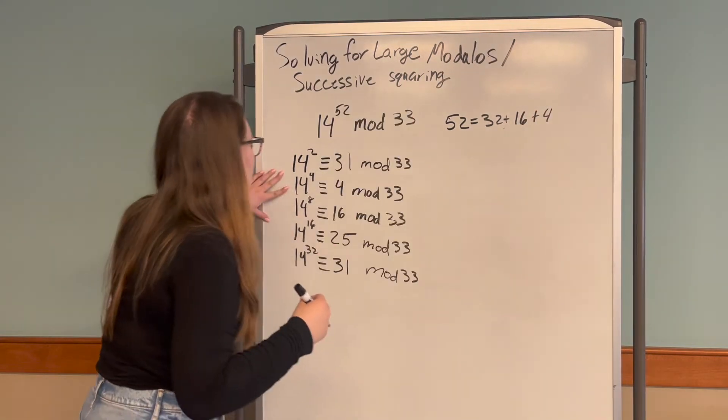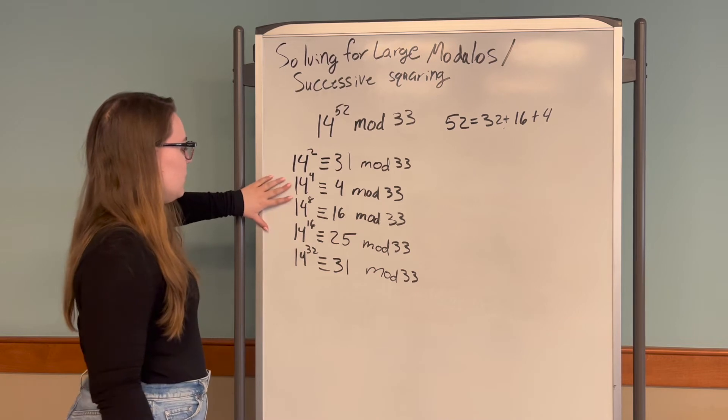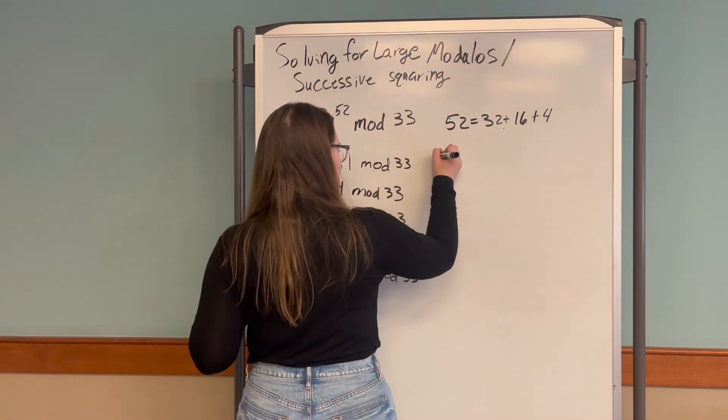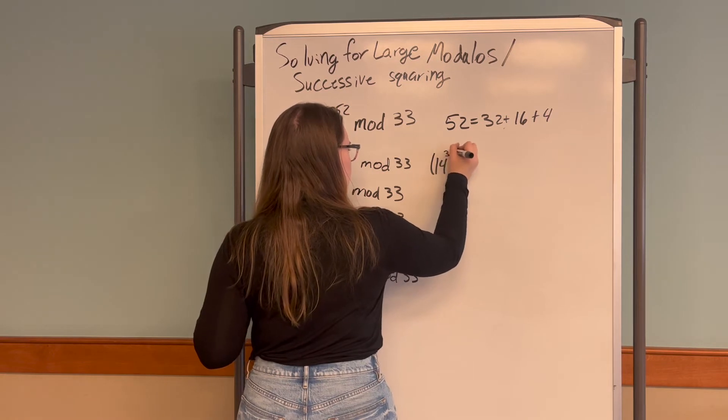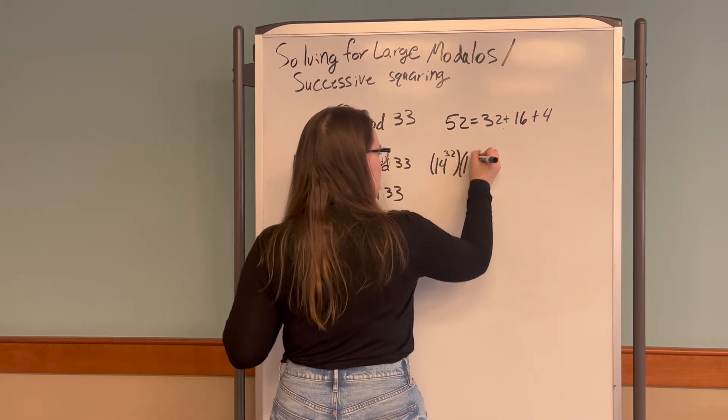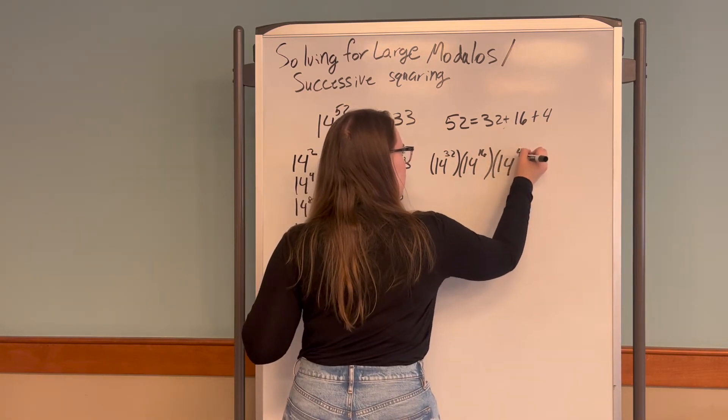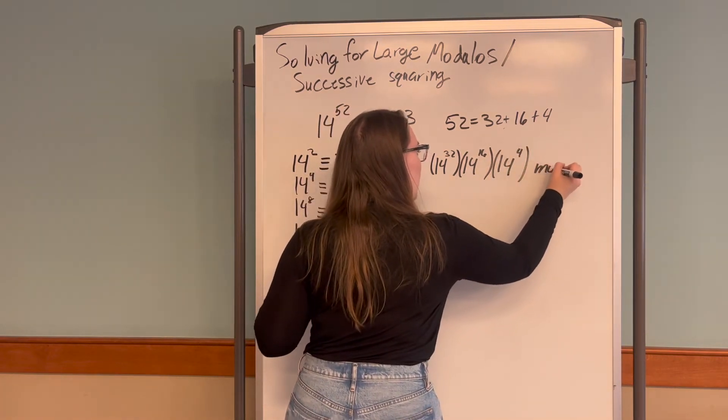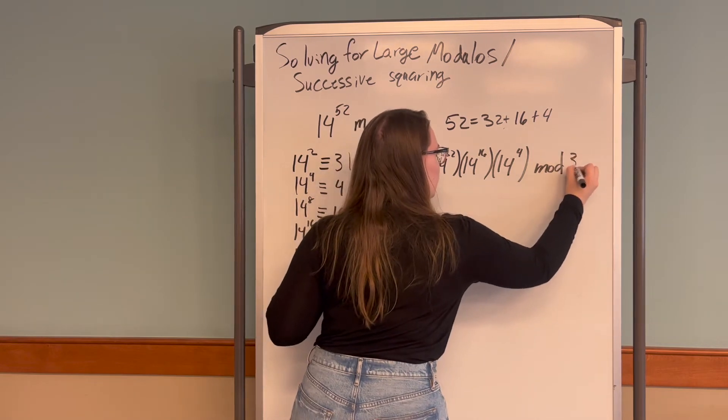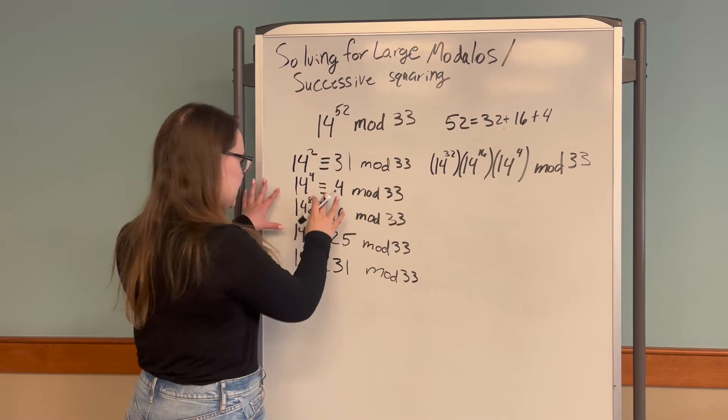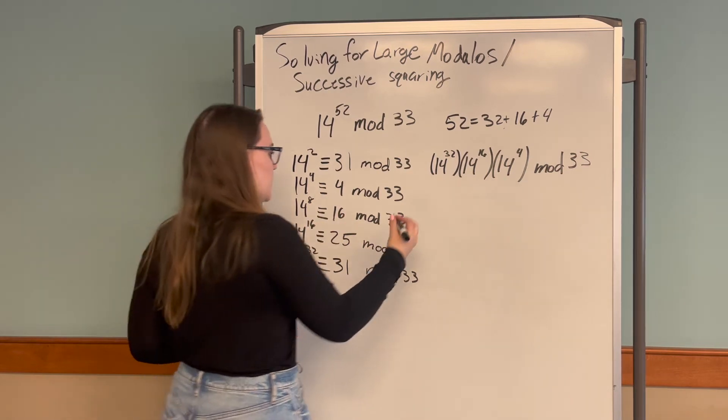We're going to look at each of the modulus values that correspond to those numbers. So we're going to look at 14 to the 32 times 14 to the 16 times 14 to the 4 mod 33. We already have all these numbers from our earlier computations, so we can just plug them in.